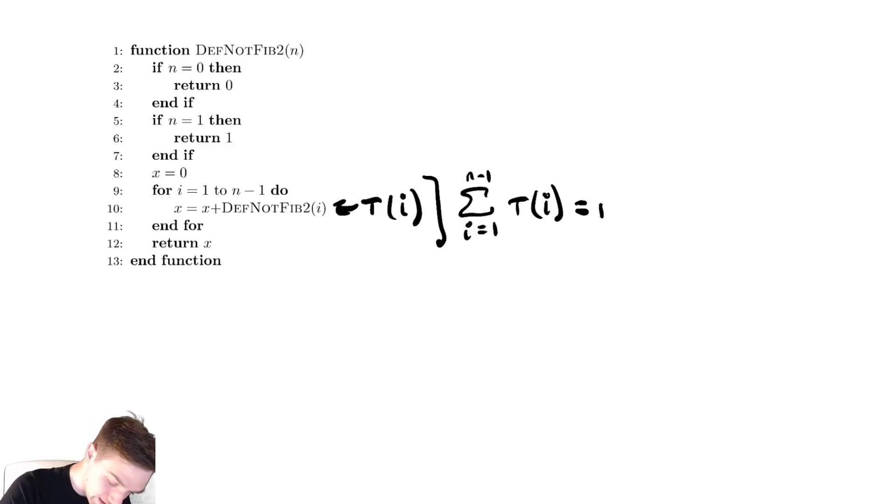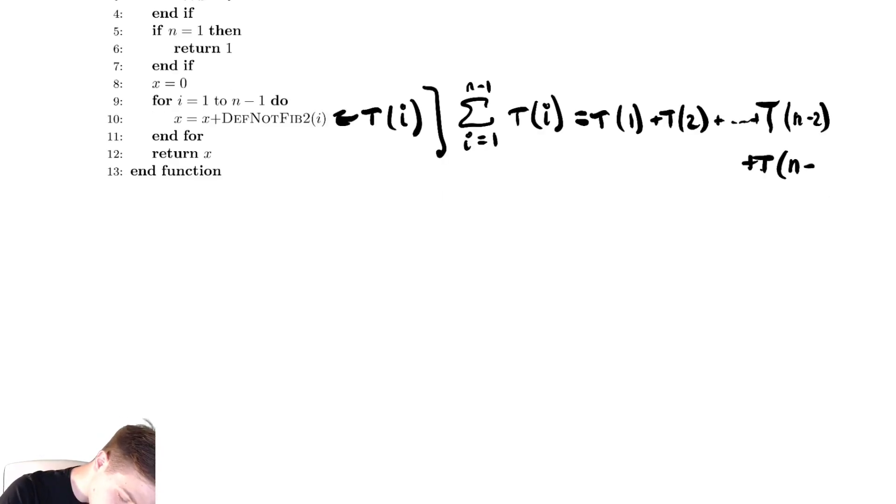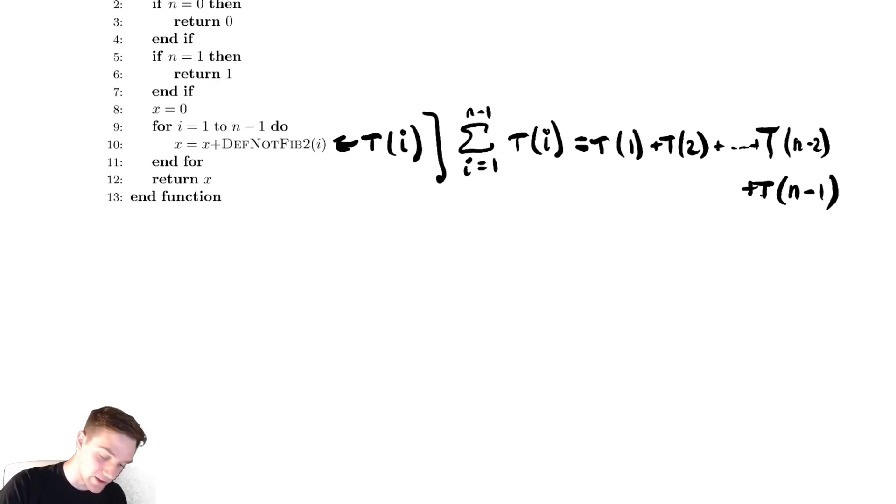Which we could write out as t of one plus t of two plus up until t of n minus two plus t of n minus one. And then the cost of everything else is just constant.